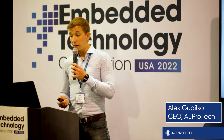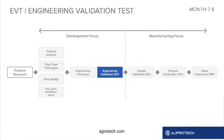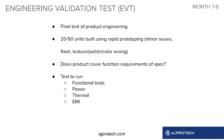So engineering validation test — after you have samples, it's time to validate everything. We call it EVT stage, and typically you either use your existing prototypes or you run a new set of prototyping. The core question you need to answer here is: does the product cover the functionality described in the product specification?